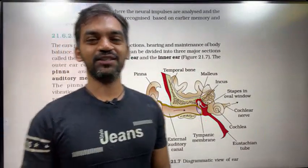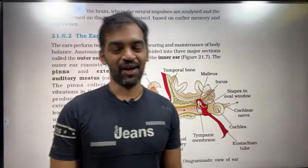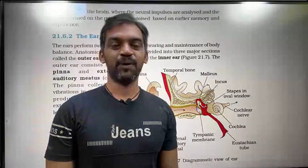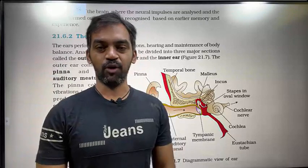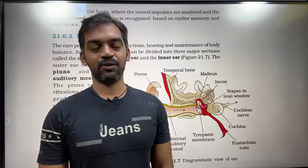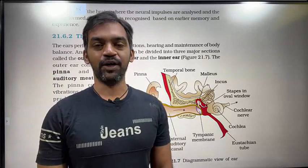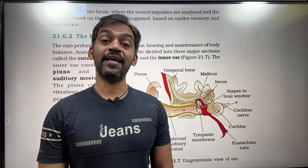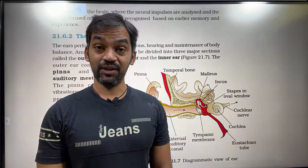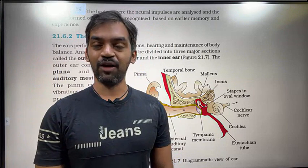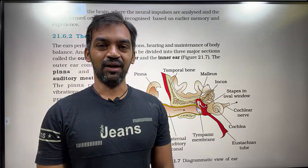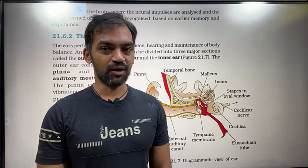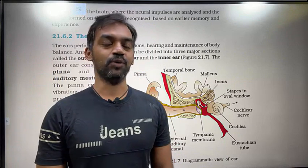Hi friends, welcome to Biology Simplified Tamil. This is the last part video of the Neural Control and Coordination chapter. Part one was recorded and uploaded previously. Now this is the Chemical Coordination and Integration chapter, and Neural Control and Coordination is now complete.